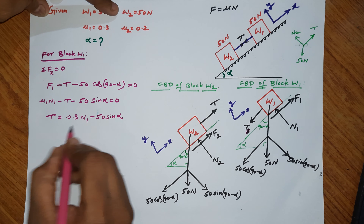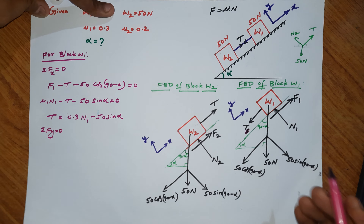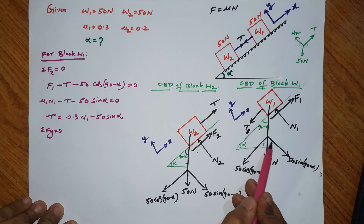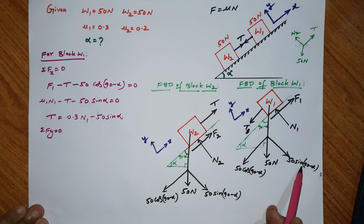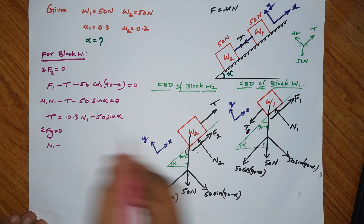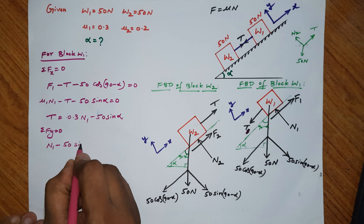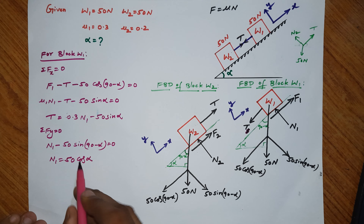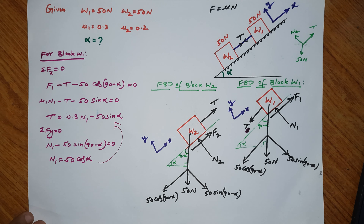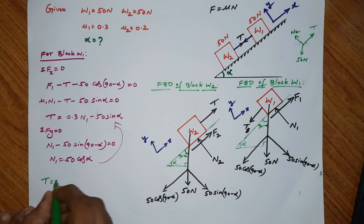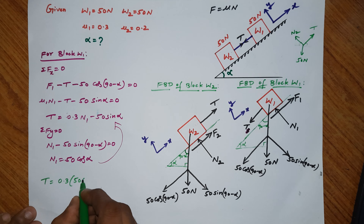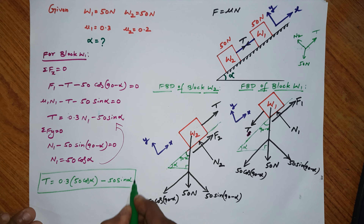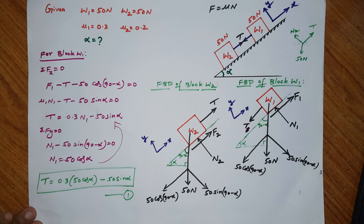Applying Sigma Fy = 0 for W1 block: N1 upward minus 50 sin(90 minus alpha) downward = 0. Therefore N1 = 50 sin(90 minus alpha) = 50 cos(alpha). Substituting N1 back into the tension equation: T = 0.3 × 50 cos(alpha) minus 50 sin(alpha). This is Equation 1 from the W1 block analysis.